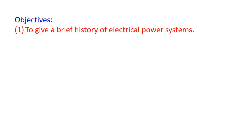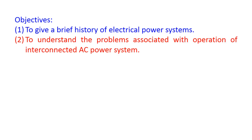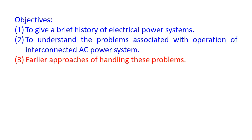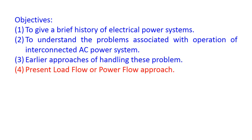The first objective is to give a brief history of electrical power systems. The second objective is to understand the problems associated with operation of interconnected AC power system. The next objective is to know about earlier approaches of handling these problems. The fourth objective is to elaborate the present load flow or power flow approach.